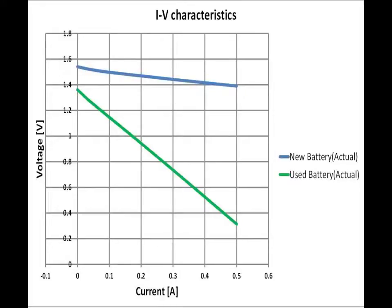Blue and green lines show the IV curves of the new and used battery, respectively. Compared with the new battery's voltage, the used battery's voltage drops steeply as the load current increases.